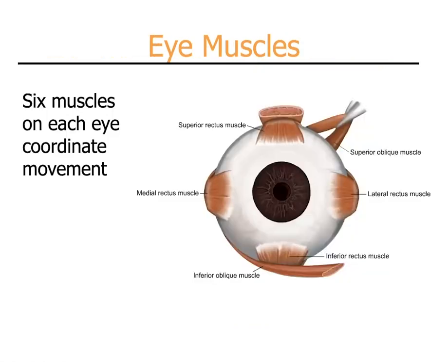Each eye has six muscles which move it side to side, up and down, and also provide rotation of the eye.